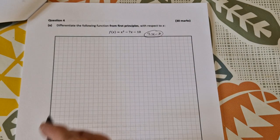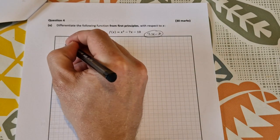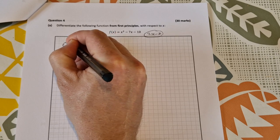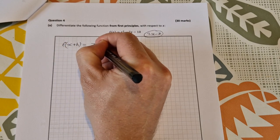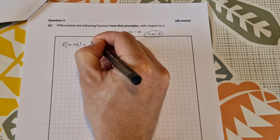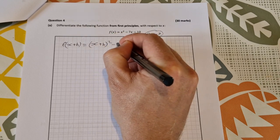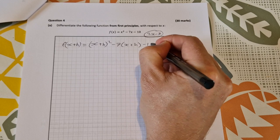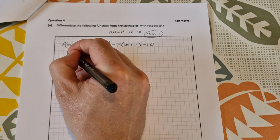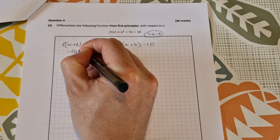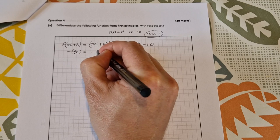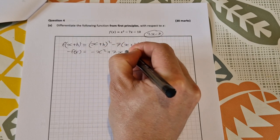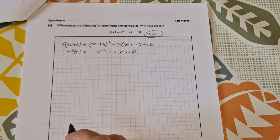Let's go ahead and use first principles. First, f(x+h) would be (x+h)² - 7(x+h) - 10. Then we do minus f(x), which equals -x² + 7x + 10.